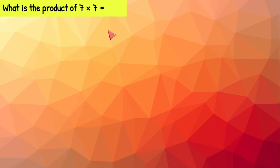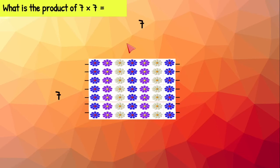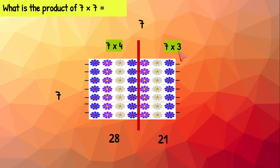Seven times seven means we have seven rows with seven flowers on each row. We're going to go ahead and break or chop or cut this array. Now we're going to have two smaller arrays. On this side we have seven rows with four flowers on each row, which is 28. Over here we have seven rows with three flowers on each row, which gives us 21. Seven times four plus seven times three, which we know is 28 plus 21, gives us 49. So we know seven times seven equals 49.